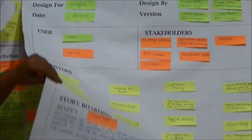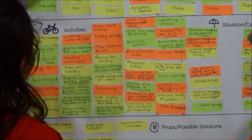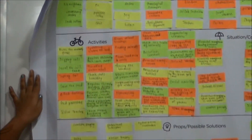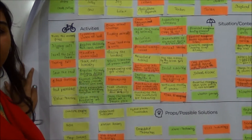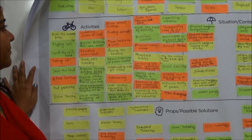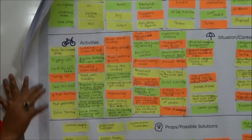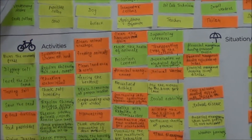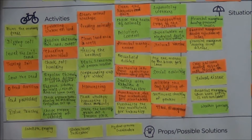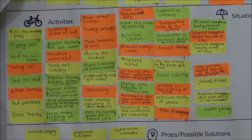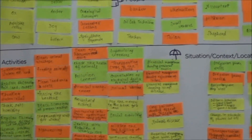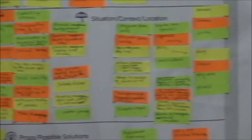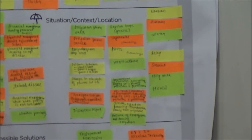On the second day, the ideation canvas, we generally work upon different things which are basically useful for the development of any prototype for these farmers. We covered different people associated with farming activity, different activities held by the farmers, different situations, locations that affect the farming process, and different possible props regarding the farming condition.